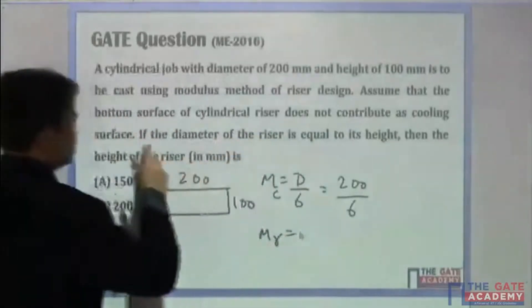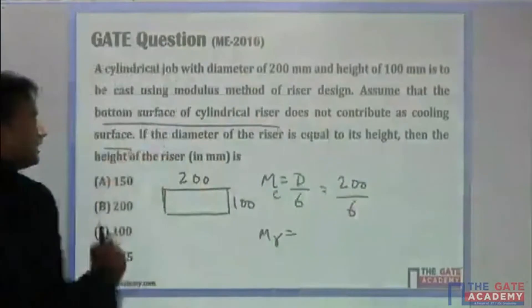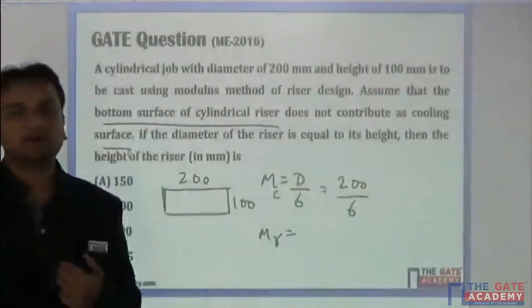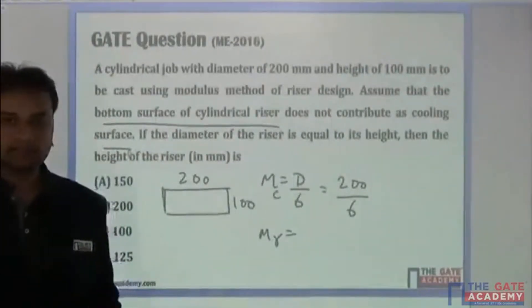Now for mr, it says the bottom surface of the cylindrical riser does not contribute as the cooling surface. That clearly indicates it is the case of a top cylindrical riser.